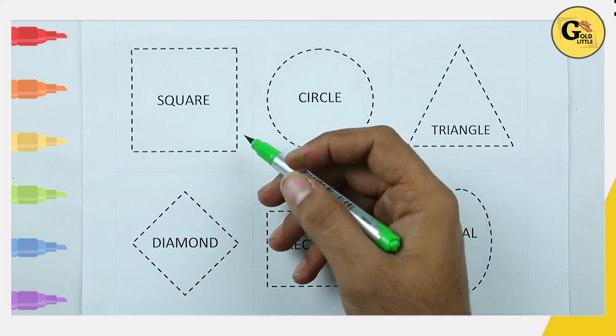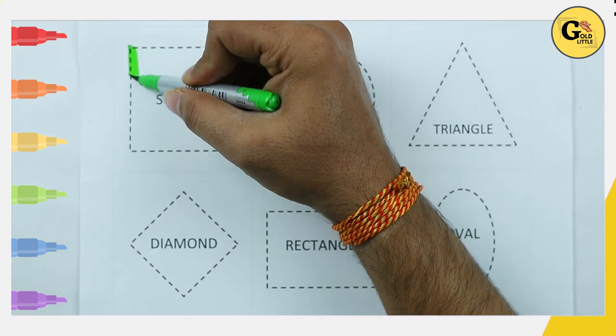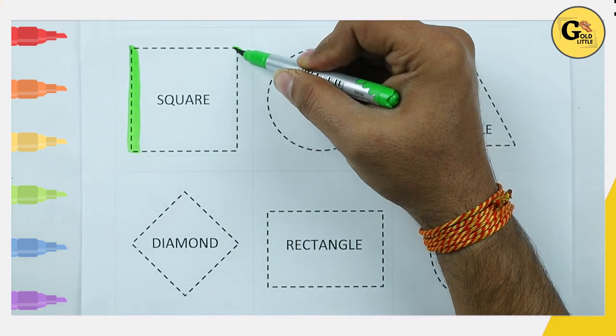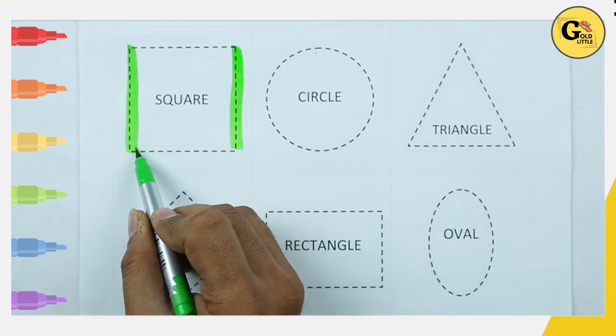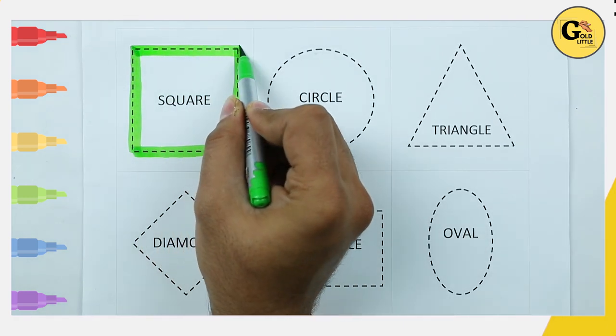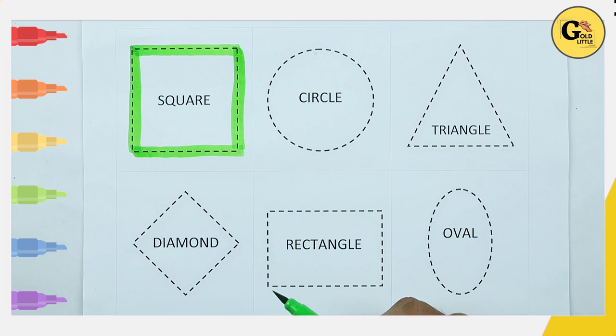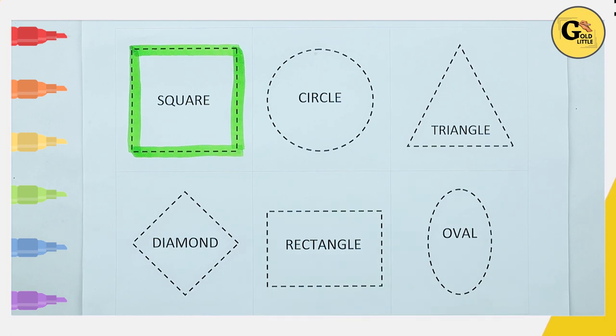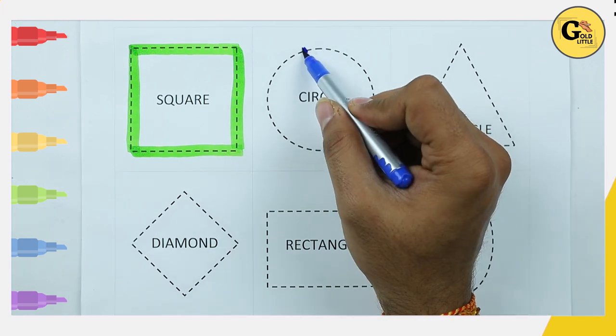It's square. One line, two line, three line, four line, two slipping line, two standing line. It's called square with green color. Circle.